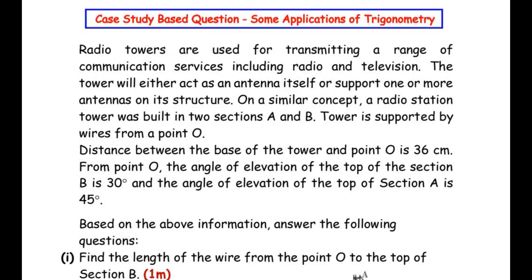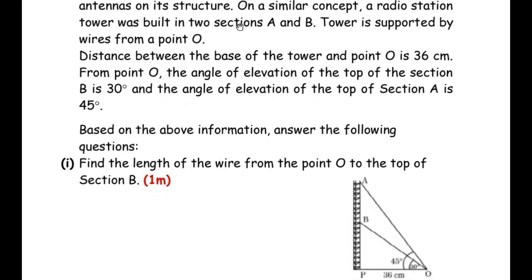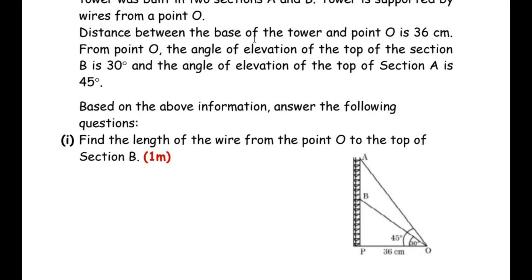Radio towers are used for transmitting a range of communication services including radio and television. The tower either acts as an antenna itself or supports one or more antennas on its structure. On a similar concept, a radio station tower was built in two sections — section A and section B. The tower is supported by wires from a point O. The distance between the base of the tower and point O is 36 cm. From point O, the angle of elevation to the top of section B is 30 degrees, and the angle of elevation to the top of section A is 45 degrees. The first question asks us to find the length of the wire from point O to the top of section B.